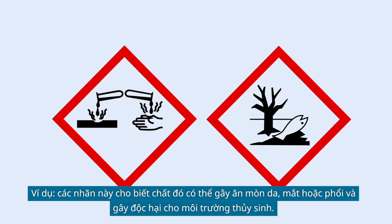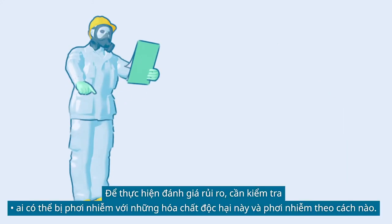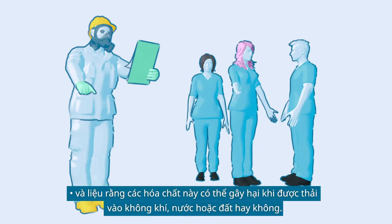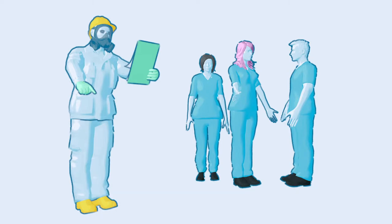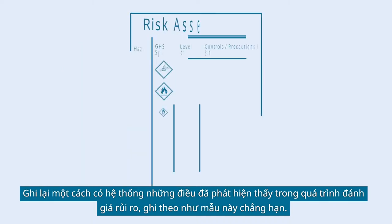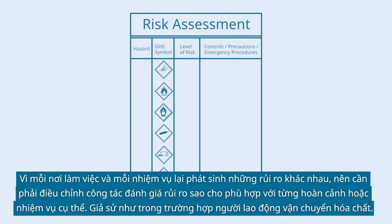To conduct the risk assessment, check who may be exposed in which way to these hazardous chemicals, and whether the chemicals may do harm when being released into air, water, or soil. Systematically record the findings of the risk assessment — for example, in a template like this one. Since the risks may vary between workplaces and tasks, the risk assessment will have to be situation or task specific.